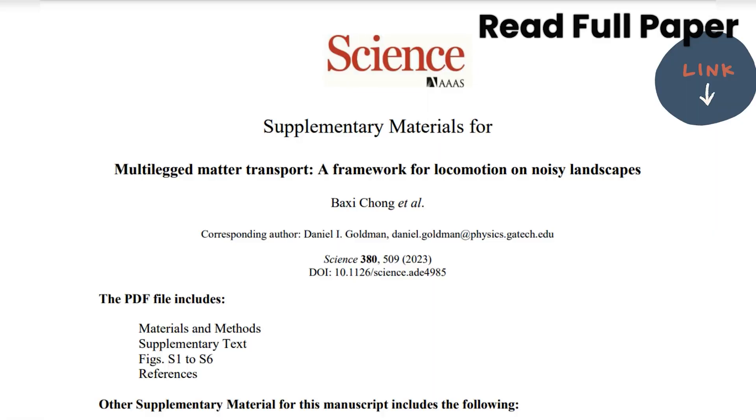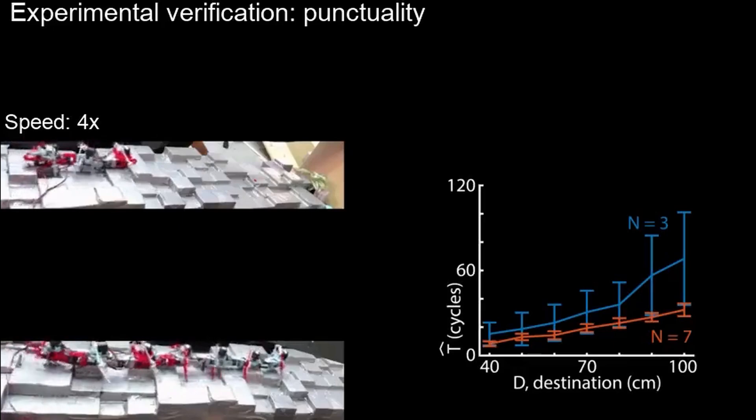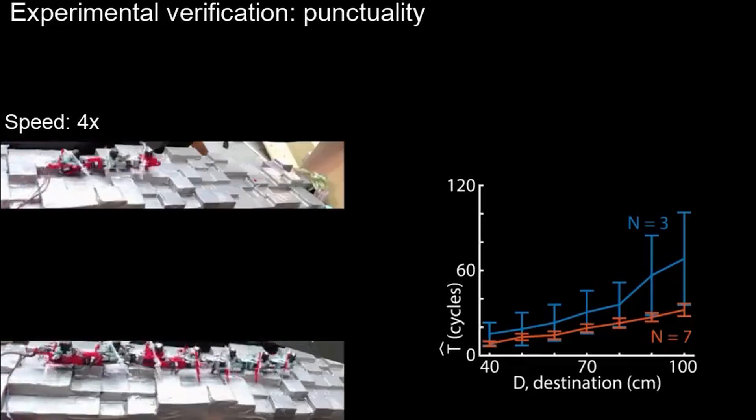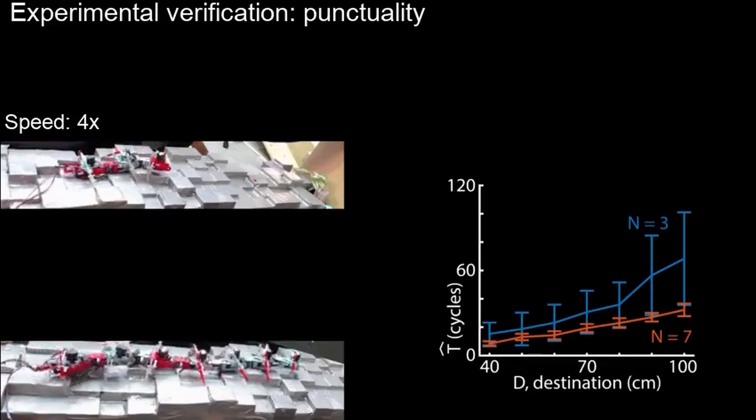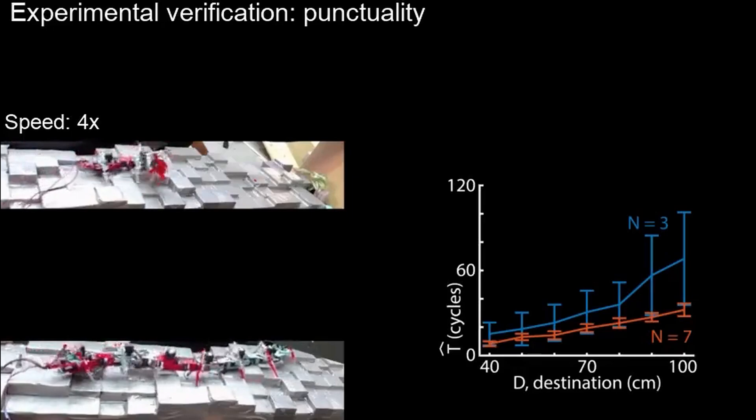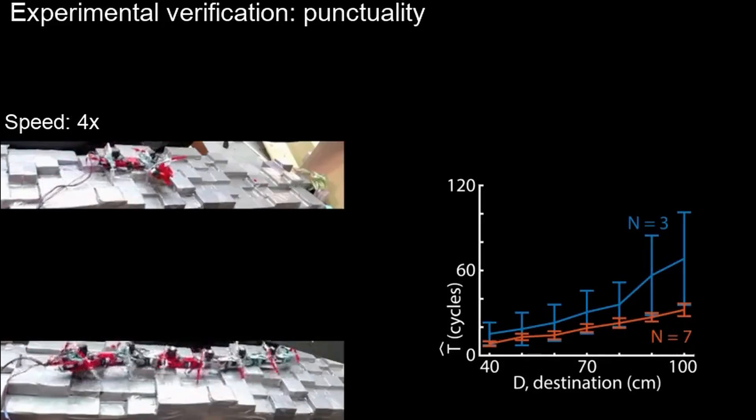The researchers at the Georgia Institute of Technology developed a theory of multi-legged locomotion and created many-legged robotic models. They discovered that the robot with redundant legs could move across uneven surfaces without any additional sensing or control technology as the theory predicted.